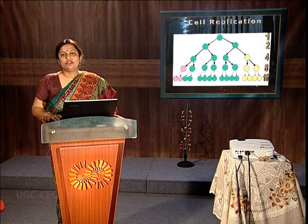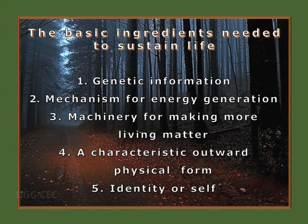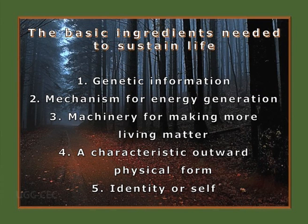After replication, cell division should also occur. These are the essential features of any living system — the basic ingredients needed to sustain life. First, all life forms should have genetic information coded in their DNA. Second, they should have a mechanism to generate energy, done by means of metabolism. The energy generated helps carry on the processes of replication, cell division, and many other processes necessary to sustain life.